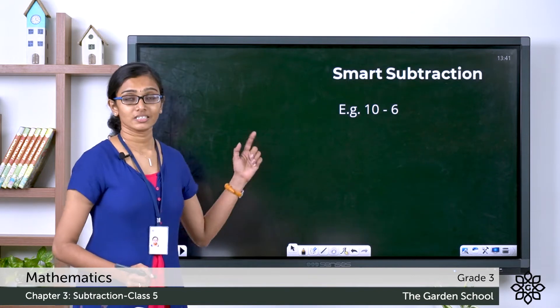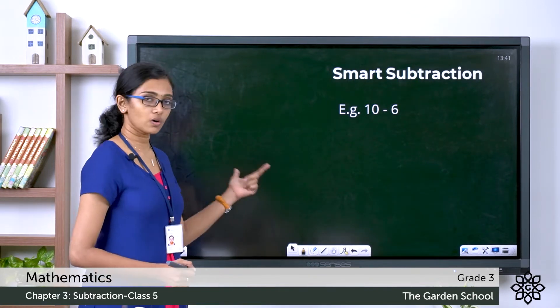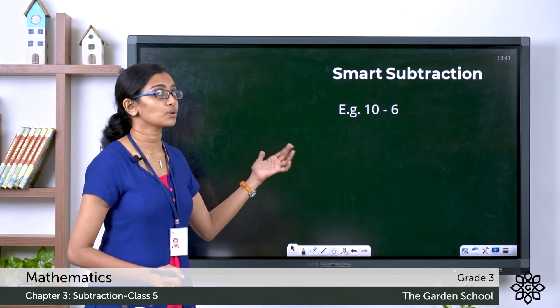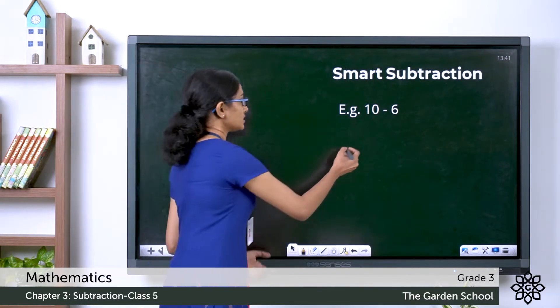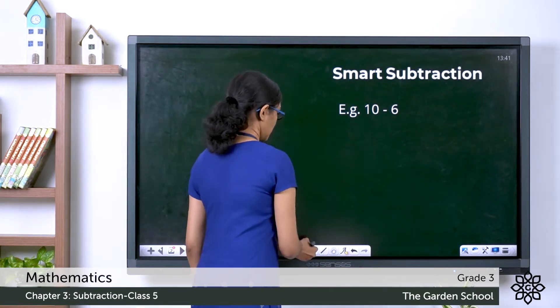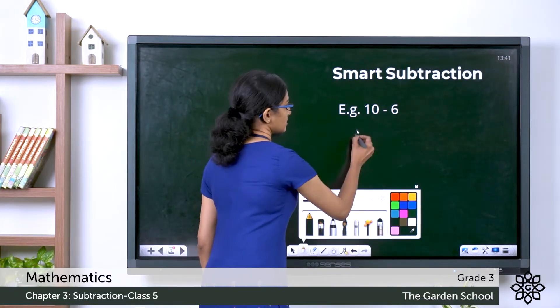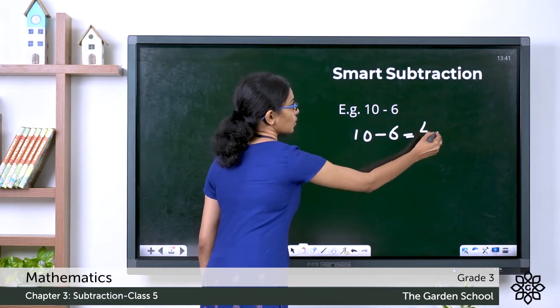Look at this simple example. We all know what is 10 minus 6. What is 10 minus 6? It is 4. 10 minus 6 equals 4.